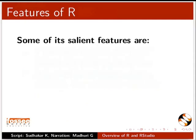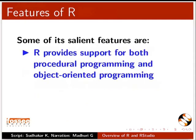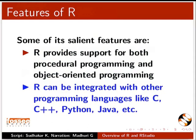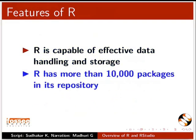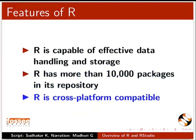Some of its salient features are: R provides support for both procedural programming and object-oriented programming. R can be integrated with other programming languages like C, C++, Python, Java, etc. R is capable of effective data handling and storage. R has more than 10,000 packages in its repository. R is cross-platform compatible.